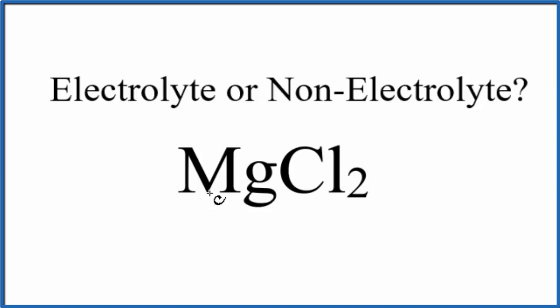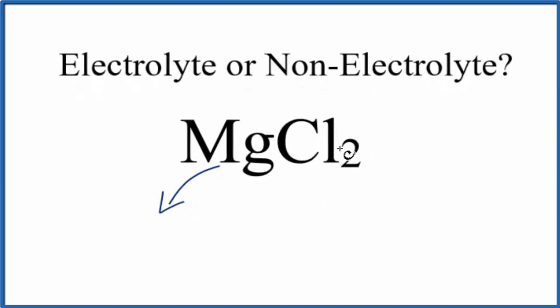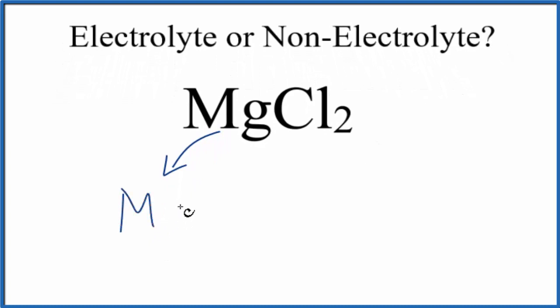So magnesium, that's in group two on the periodic table. When this dissolves, when MgCl2 dissolves, we'll get Mg and magnesium in group two is going to be two plus.